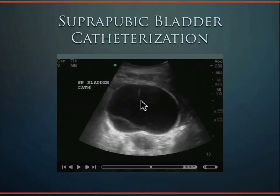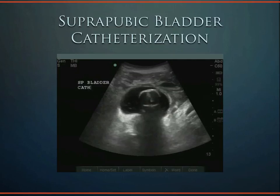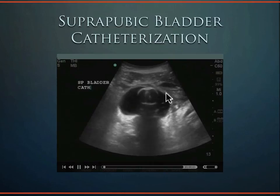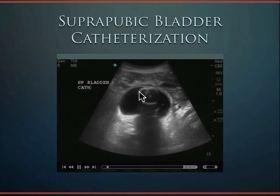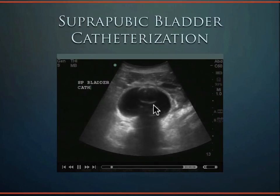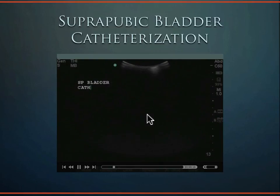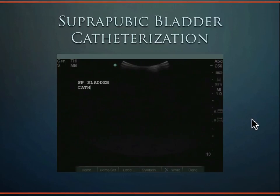After the catheter is placed, the bladder has much less urine visible. A balloon at the end of the catheter is inflated with saline to hold the catheter in place so it doesn't fall out.